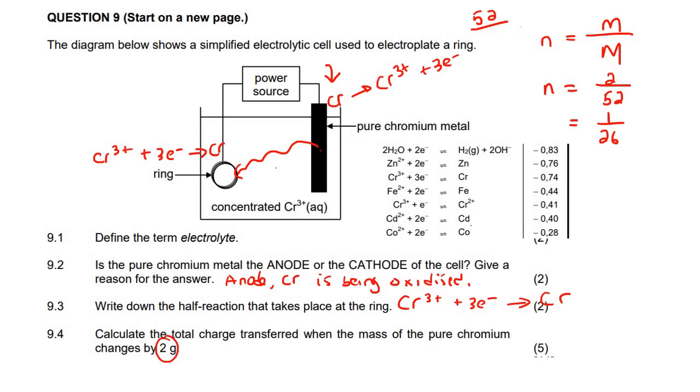Now what we want to do is we want to see how many electrons is that because that is what is being transferred here. It's charge. Charge is the flow of electrons.